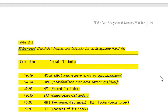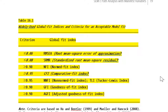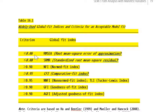On page 19, Table 16.1 presents widely used global fit indices and criteria for acceptable fit. For example, with the RMSEA, an acceptable fit is indicated when the statistic is less than or equal to 0.06. For the NFI, acceptable fit requires a value equal to or greater than 0.90. Students will use this table in an upcoming exercise interpreting results from a path analysis with manifest variables.